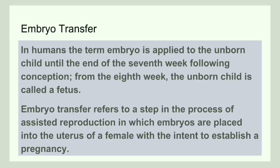First, we will discuss what is an embryo. An embryo is an unborn child, i.e. a child that has not been born until the age of the 7th week of conception. So till the 7th week of conception, an unborn child is called an embryo.